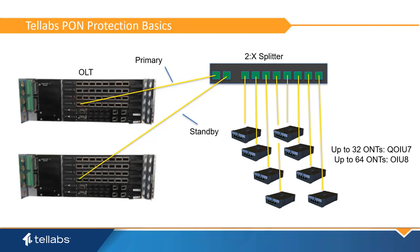The two-input fiber splitter allows both PONs to have the capability to inject light into the PON network and detect the traffic going to and from the other OLT.